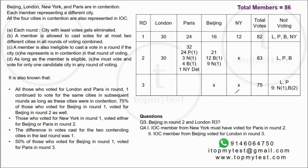Now for round three: 75 total votes, and the difference between the two remaining cities was 1. So one city got 38 and the other 37. We know 50% of those who voted for Beijing in round one voted for Paris in round three — that's 8 of the 16 Beijing voters voting for Paris.